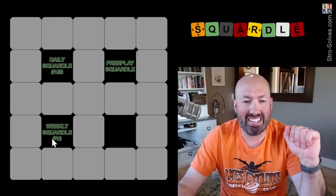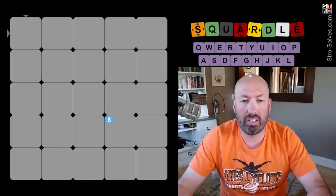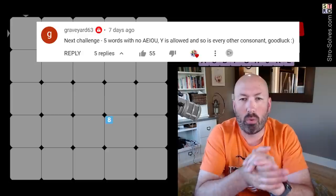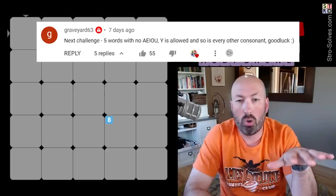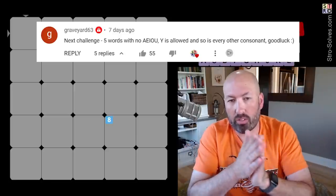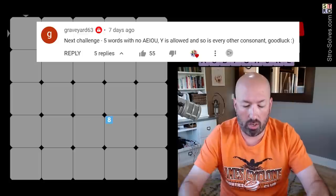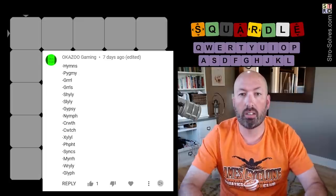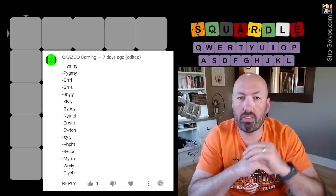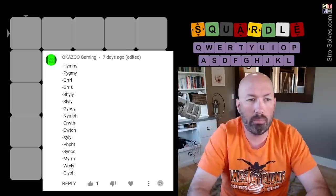I'm looking at Weekly Squaredle number 10. The last couple of weeks I've been doing some challenges for the starting words, and I've got another challenge today. Someone challenged me to start with five words that have no vowels other than Y. Basically no A, E, I, O, or U for the first five words. Someone in the responses was helpful enough to give a list of some of those words, so we're going to go with some of those today. I think I'm going to start with hymns.